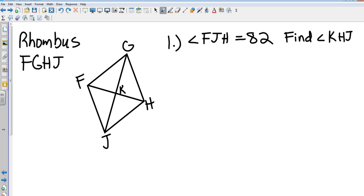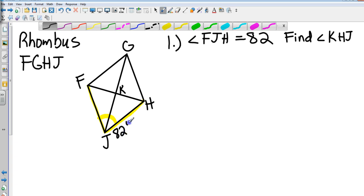Okay, if I've got rhombus FGHJ and my intersection point there in the middle is K where my diagonals come together, let's look at this first example. If angle FJH is 82 degrees, okay, so FJH, that is this whole angle right here. If that thing is 82 degrees, we want to find angle KHJ. So that's going to be KHJ, that's going to be this little angle right here.